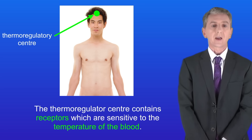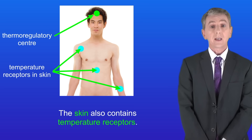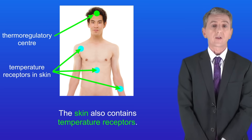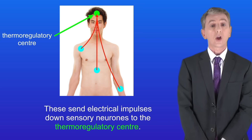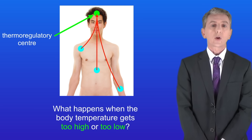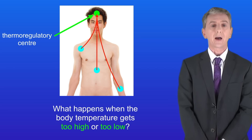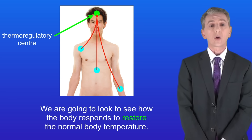The thermoregulatory center contains receptors which are sensitive to the temperature of the blood. The skin also contains temperature receptors. These send electrical impulses down sensory neurons to the thermoregulatory center. So the question is: what happens when the body temperature gets too high or too low? We're going to look at how the body responds to restore the normal body temperature.